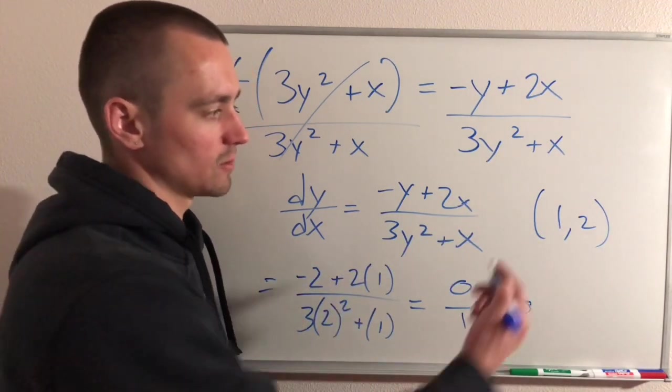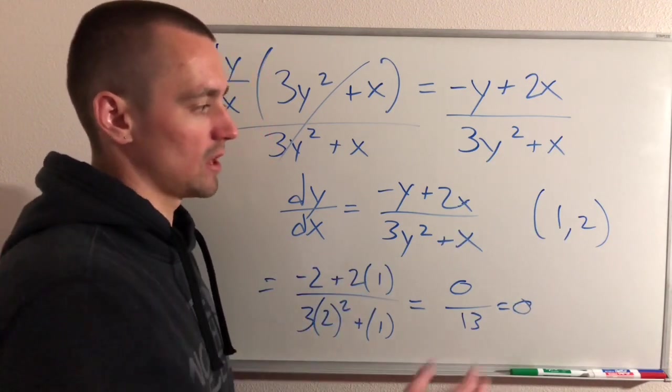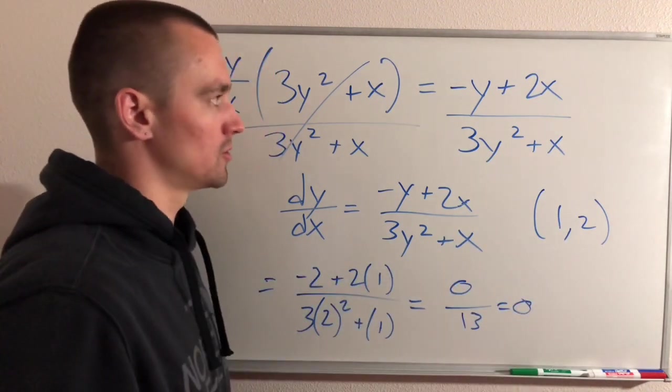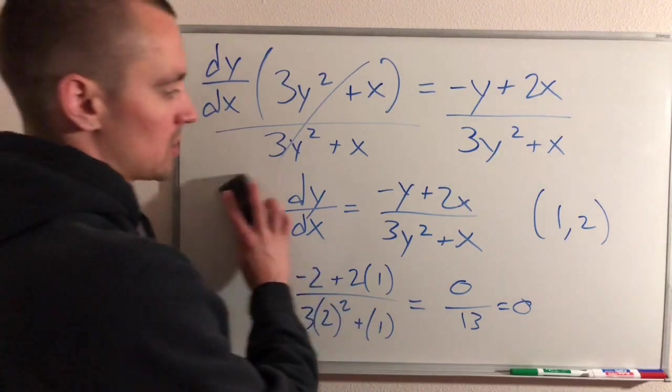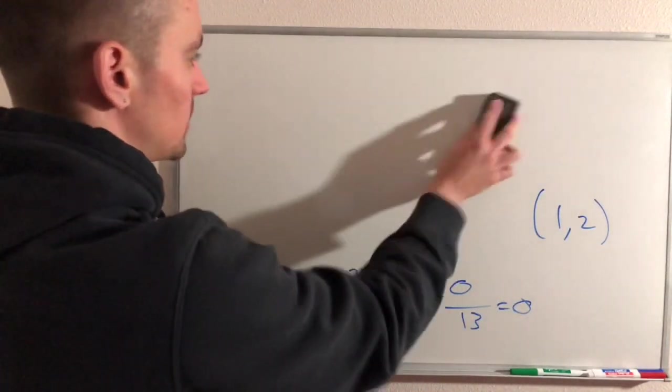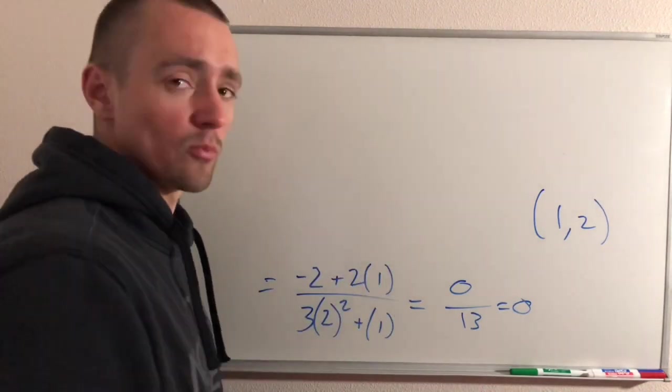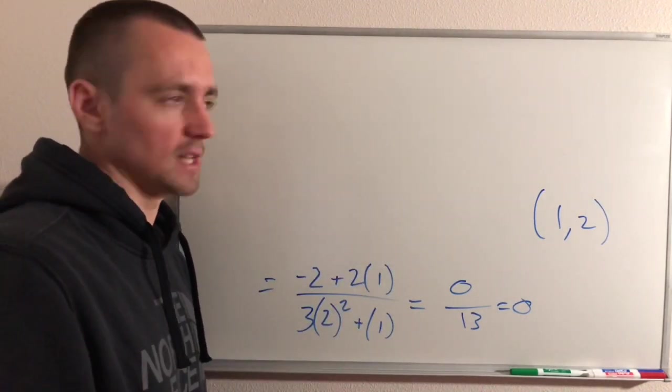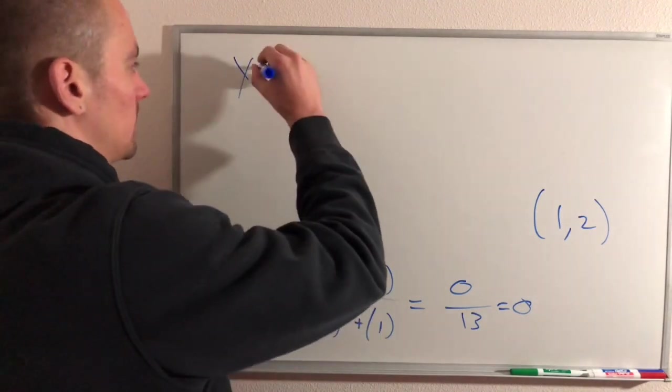And then the other piece is we need to make sure that our tangent line goes through the point (1,2). So in general, the equation for our tangent line, if we use the point slope formula, which is usually going to be easier when you're dealing with these tangent line equations, is going to look like this.